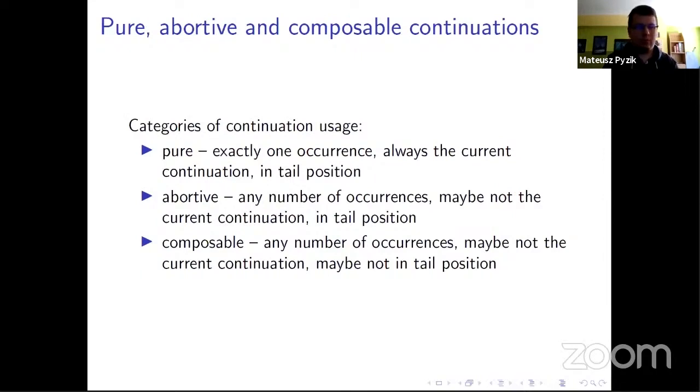So we can discern three kinds of continuation usage. There are pure continuations which are in tail positions. They always use the current continuation, the one that was introduced the latest. There is always exactly one occurrence of each continuation. There can be also abortive continuations, which might ring a bell about call CC. Then we have any number of occurrences of continuations. We may use not the current continuation but some earlier defined continuation, and we still require that these are used in tail positions. And in composable usage, all those requirements are lifted. So we can use any number of occurrences, it may be not the current one, and it doesn't have to be in tail position. So we can essentially compose them, put one onto another.